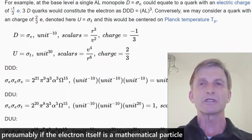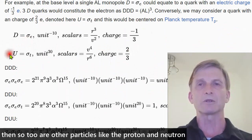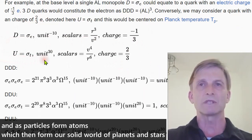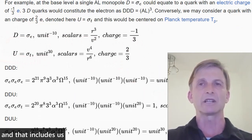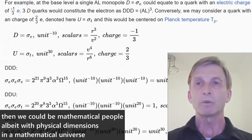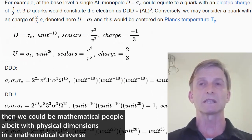Presumably, if the electron itself is a mathematical particle, then so too are other particles like the proton and the neutron. And as particles form atoms, which then form our solid world of planets and stars. And that includes us. Then we could be mathematical people, albeit with physical dimensions, in a mathematical universe.